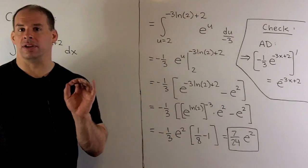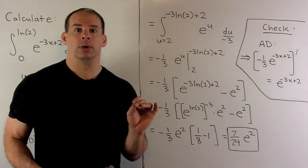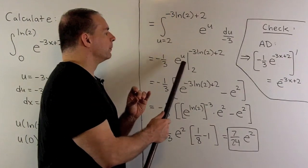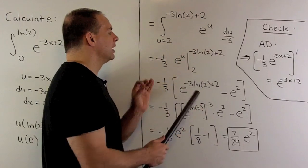If I want the antiderivative of e to the u with respect to u, we just get back e to the u. So we're going to wind up with minus 1 third e to the u. Then we evaluate at minus 3 natural log of 2 plus 2 and 2, take the difference.